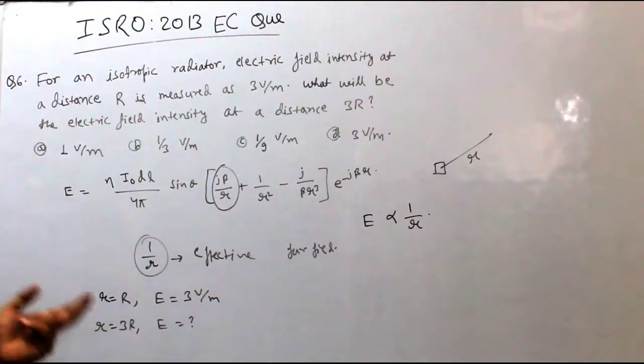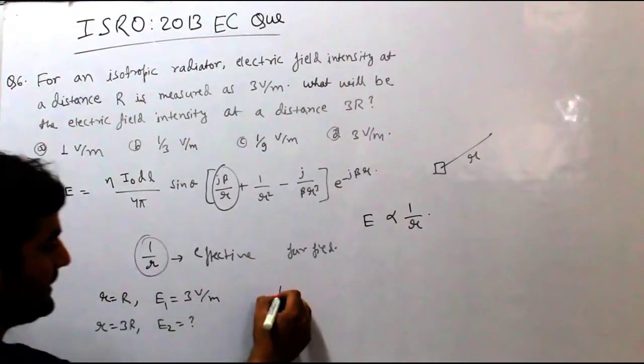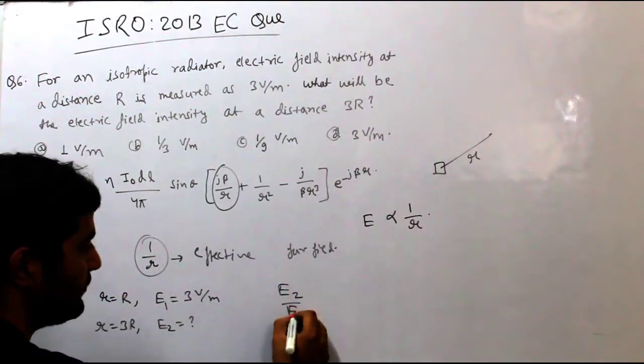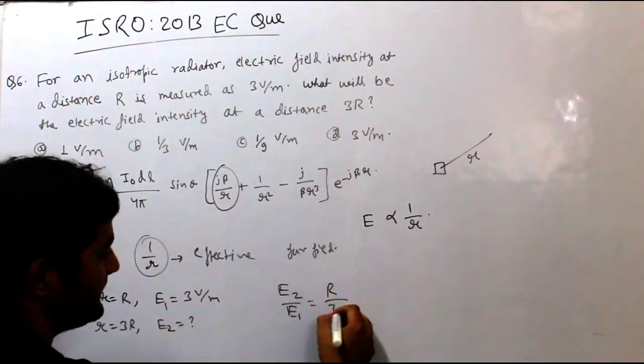So, electric field is reciprocal. So, this electric field, if we talk about E2, E2 upon E1 will be equal to R1 upon R2. R1 means R upon 3R.